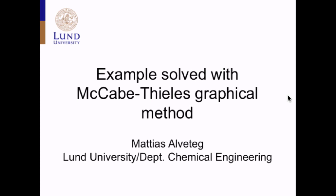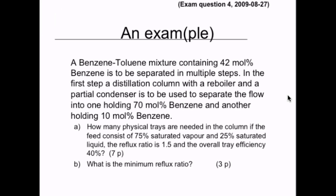We will continue with solving an example using McCabe-Thiele's graphical method. The example is taken straight from an exam in 2009, where a benzene-toluene mixture containing 42 mol percent benzene is to be separated in multiple steps. In the first step, a distillation column with a reboiler and a partial condenser is to be used to separate the flow into one stream holding 70 mol percent benzene and another holding 10 mol percent benzene.